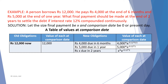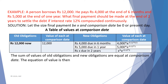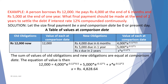The value of Rs. 4,000 due in 6 months at comparison date is 4,000 multiplied by e raised to the power minus 0.12 multiplied by 0.5. The value of Rs. 5,000 due in 1 year at comparison date is 5,000 multiplied by e raised to the power minus 0.12 multiplied by 1. The value of Rs. x due in 2 years at comparison date is x multiplied by e raised to the power minus 0.12 multiplied by 2. The equation of value is: 12,000 equals 4,000 multiplied by e to the power minus 0.12 times 0.5, plus 5,000 multiplied by e to the power minus 0.12 times 1, plus x multiplied by e to the power minus 0.12 times 2. After calculation we will get the value of x.